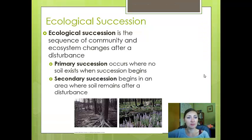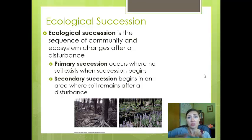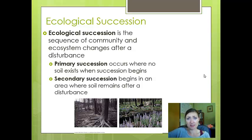Succession is a sequence of community and ecosystem changes after a disturbance. Primary succession occurs when there is no soil remaining — you're back to bare rock. Examples include volcanic eruptions leaving lava, and glacial retreat leaving only rocks. Secondary succession begins in an area where the soil remains intact after a disturbance, such as after a forest fire, hurricane, or tornado. Because the soil is already there, the return to a climax community is much faster in secondary succession than in primary succession.